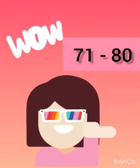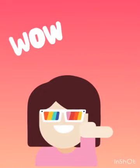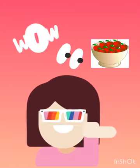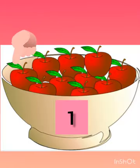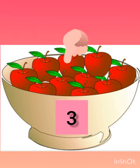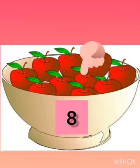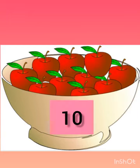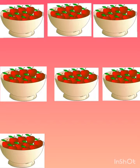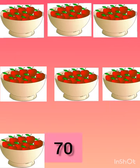Now it's time to count number of objects from 71 to 80. For that we will count a basket full of apples. Let's see — in one basket, how many apples are there? 1, 2, 3, 4, 5, 6, 7, 8, 9, and 10. There are 10 apples in one basket, so we have one set of 10. I can see many baskets, so I will use skip counting by tens: 10, 20, 30, 40, 50, 60, and 70.